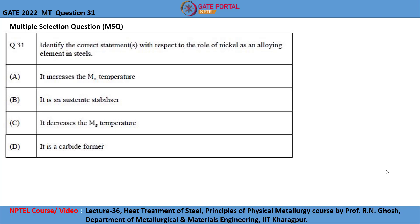Let me study the 31st question of Gate 2022, which is a multiple selection question. Identify the correct statements with respect to the role of nickel as an alloying element in steels. The options given are: Option A, it increases the martensite start temperature. Option B, it is an austenite stabilizer. Option C, it decreases the martensite start temperature. And Option D, it is a carbide former.